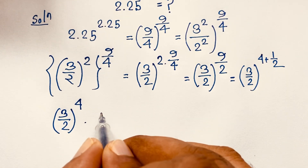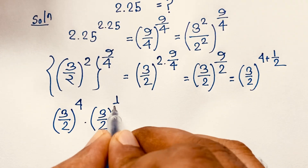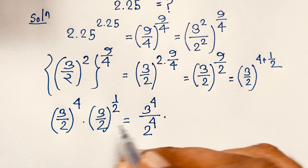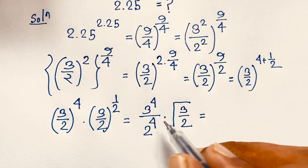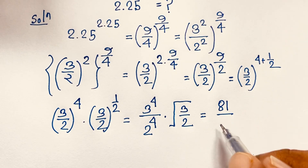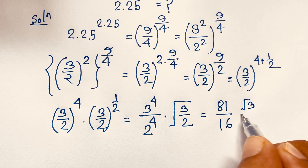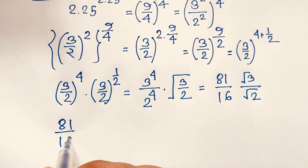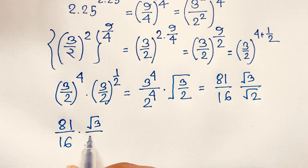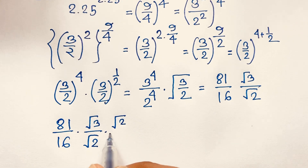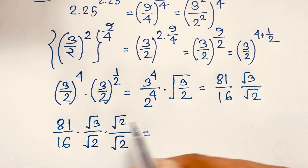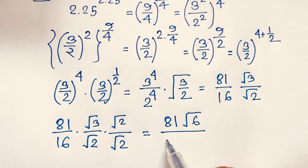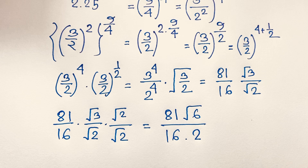The expression becomes (3/2)⁴ times (3/2)^(1/2). This simplifies to 3⁴ over 2⁴, times the square root of 3 over the square root of 2. Now 3 to the power 4 is 81, and 2 to the power 4 is 16. We also have square root of 3 over square root of 2, which is square root of 6 over 2, giving us 16 times 2 in the denominator.